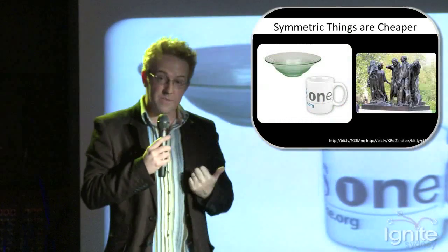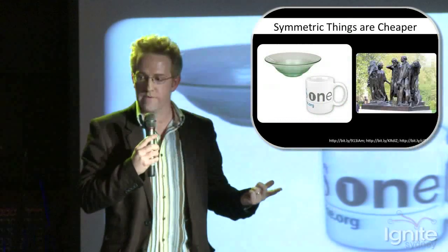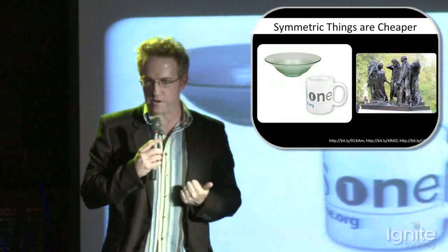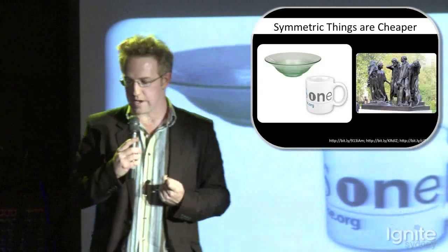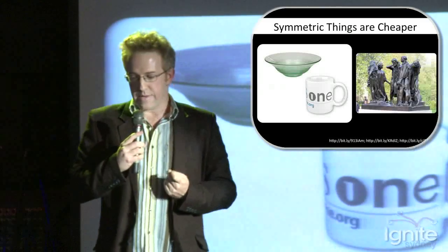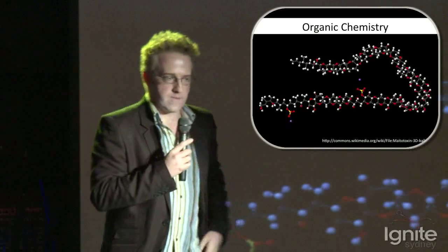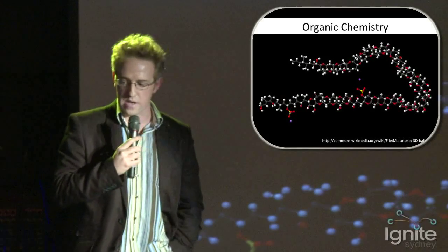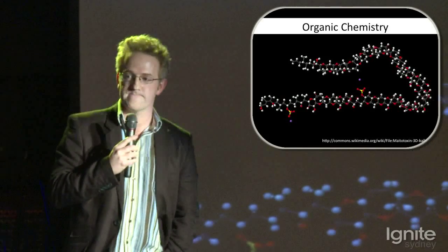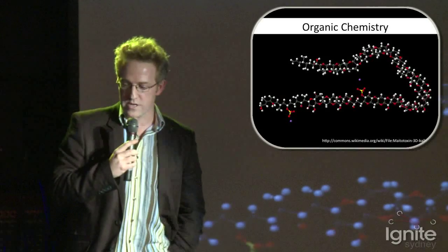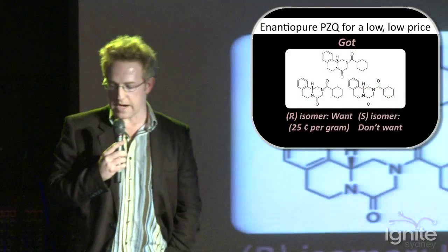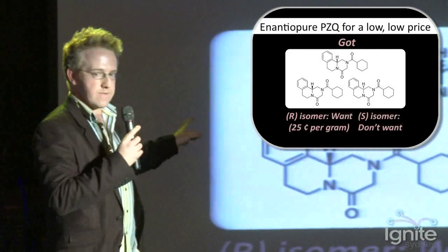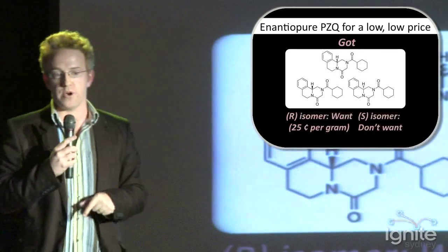Praziquantel has this feature of asymmetry. Generally it's easier to make symmetric things, like bowls and mugs. By the time you get to this Rodin sculpture, which is asymmetric, it gets expensive. This is a problem with molecules if you're going to make things cheaply for neglected tropical diseases. We can make any molecule you want for a price — this is maitotoxin, a very complicated molecule being made by a lab in the States — but the cost is a problem. For schistosomiasis, we want this drug at a low price. We've got the racemic mixture on top; we want the active isomer on the bottom left, not the one on the bottom right. How do we do that and keep the price down?